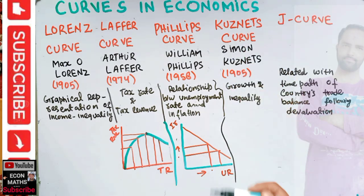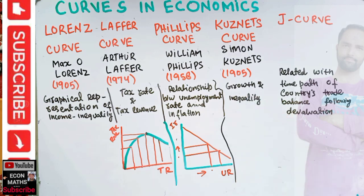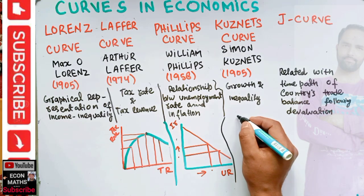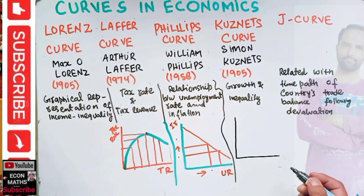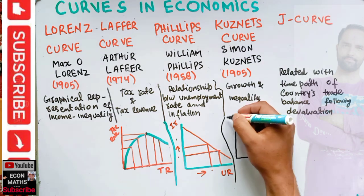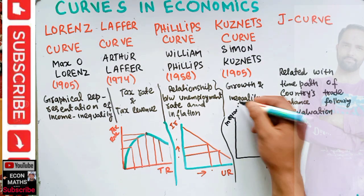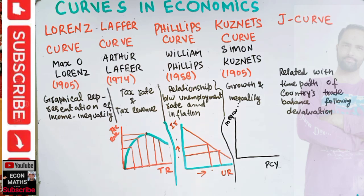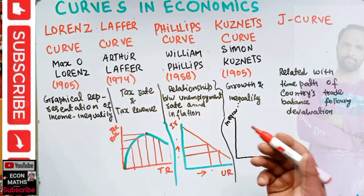Then we have the Kuznets curve. It was given by Simon Kuznets. It shows the relationship between growth and inequality. On one axis we have per capita income, and on the other axis we have inequality.